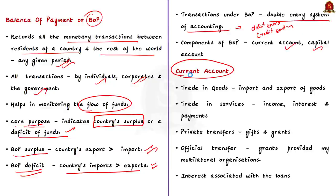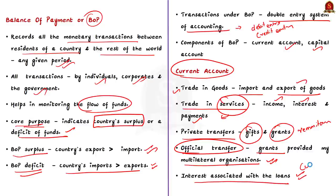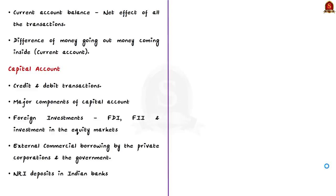The current account includes trade in goods (import and export of goods), trade in services including income, interest and payments relating to trade in services, private transfers like gifts and grants, remittances, and official transfers like grants provided by multilateral organizations. The interest associated with loans is also added in the current account. The current account constitutes an important segment of the balance of payment. The net effect of all transactions under the current account is known as the current account balance, which shows the difference between money going out and money coming into the current account.